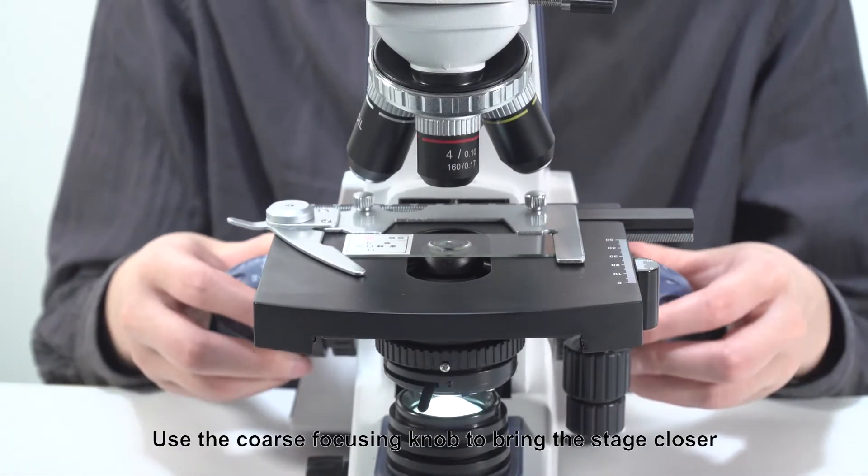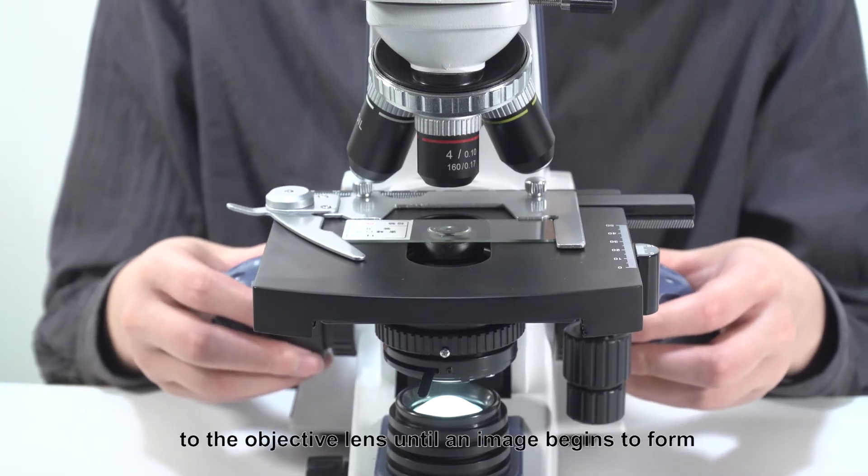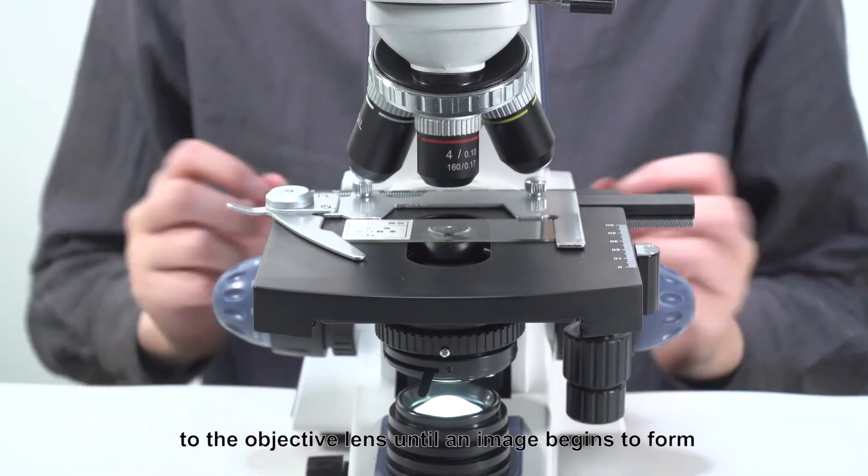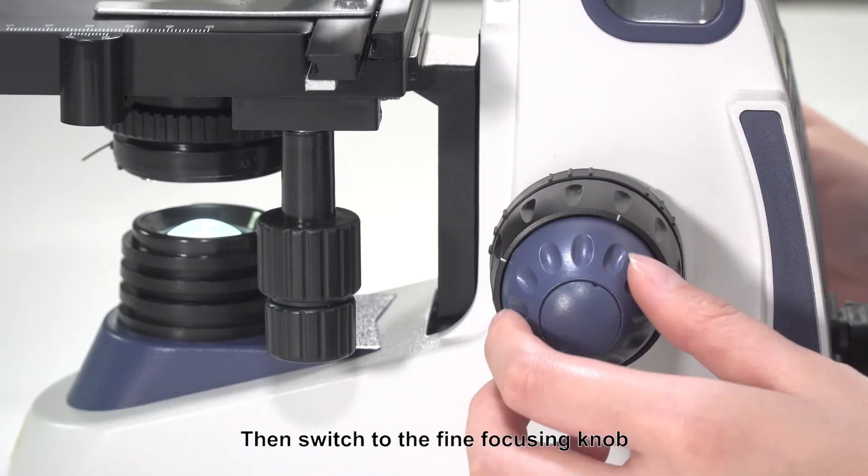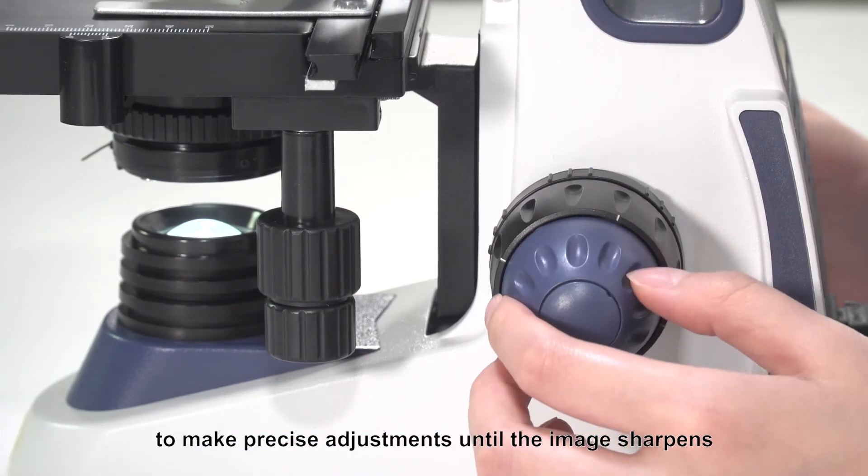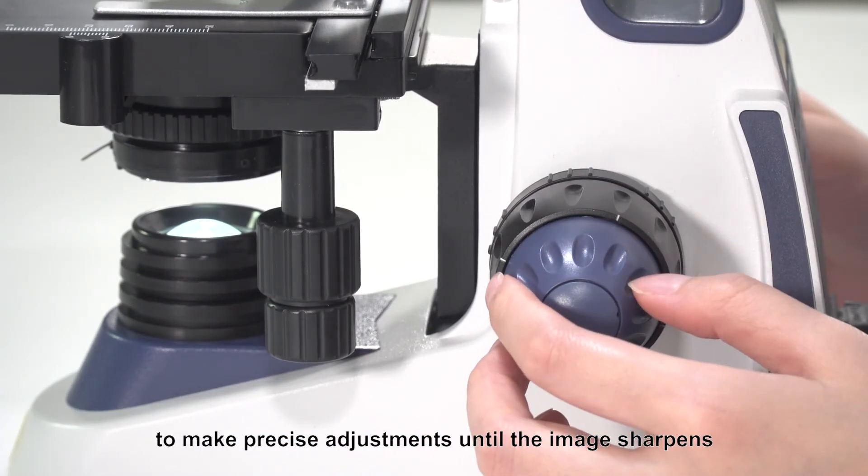Use the coarse focusing knob to bring the stage closer to the objective lens until an image begins to form. Then, switch to the fine focusing knob to make precise adjustments until the image sharpens.